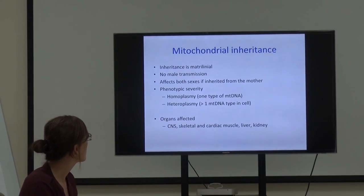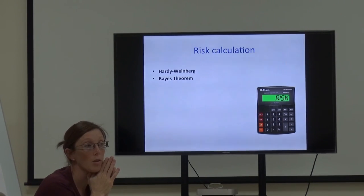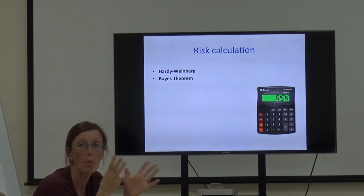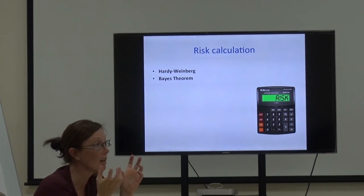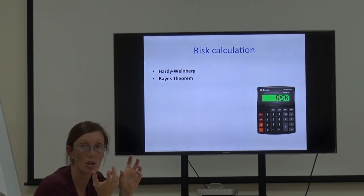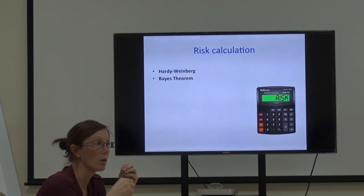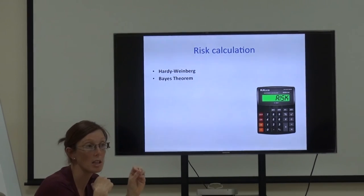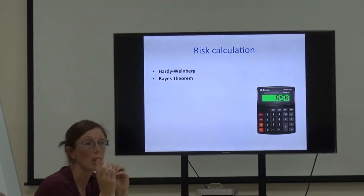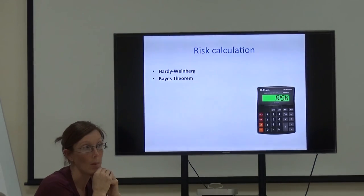For today, we're going to go through some examples of Hardy-Weinberg. Remember, Hardy-Weinberg applies when there's no history of a genetic disorder in the family — you're looking at the incidence in the general population, and you need a known figure to work it out. Bayes theorem, which we'll be using, looks at families with a genetic disorder already present and uses the inheritance pattern as the basis for that calculation. Any questions?